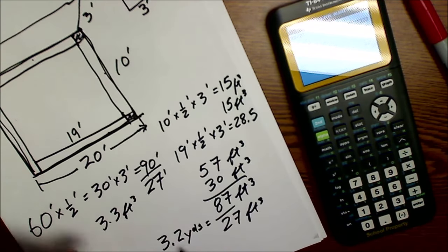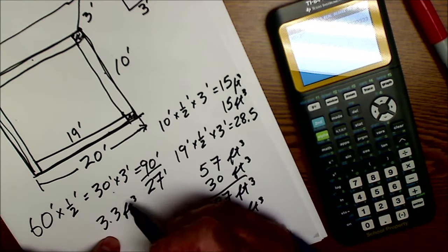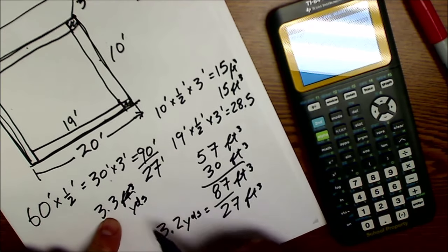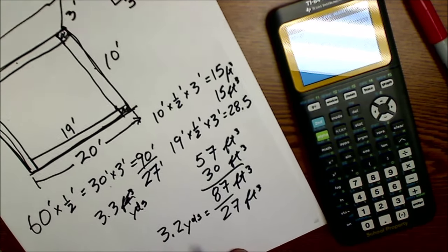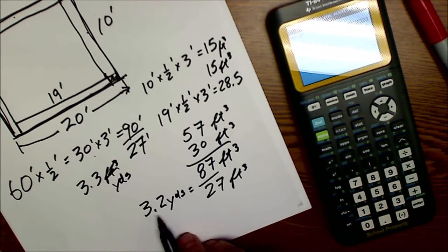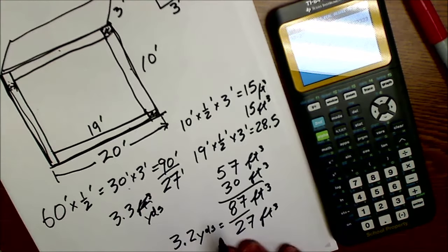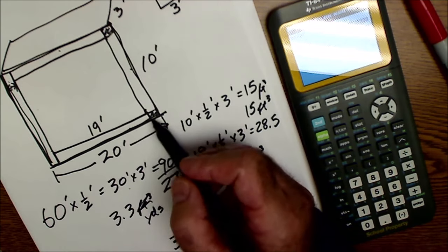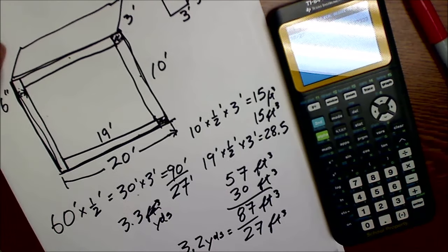And you can see it's really not—I'm sorry, 3.3 yards. So I took 90 feet divided by 27 feet, got 3.3 yards. It's actually pretty close to the accurate estimated 3.2 yards, but we're talking concrete, so we're going to round up to three and a half yards. So double counting this really isn't that big of a deal.